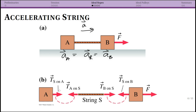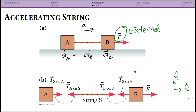The force of block A on the string and the string on block A are a Newton's third law pair. Similarly, block B pulls the string to the right, and the string pulls to the left on block B. If everything is accelerating to the right, there must be some external pulling force — say, a hand — acting on the system. We're only going to think about the horizontal (X) direction; vertical (Y) forces are set aside.